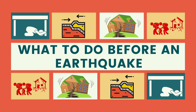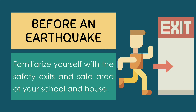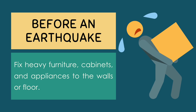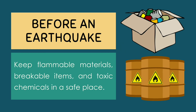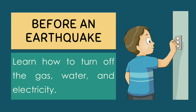What to do before an earthquake? Make a plan of where to meet your family after an earthquake. Familiarize yourself with the safety exits and safe areas of your school and house. Fix heavy furniture, cabinets, and appliances to the walls or floor. Keep flammable materials, breakable items, and toxic chemicals in a safe place. Make sure you have an emergency kit at home. Learn how to turn off the gas, water, and electricity.